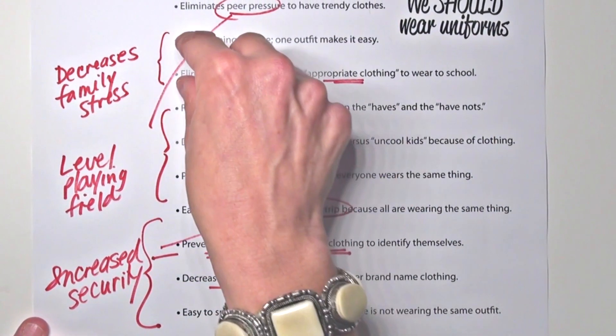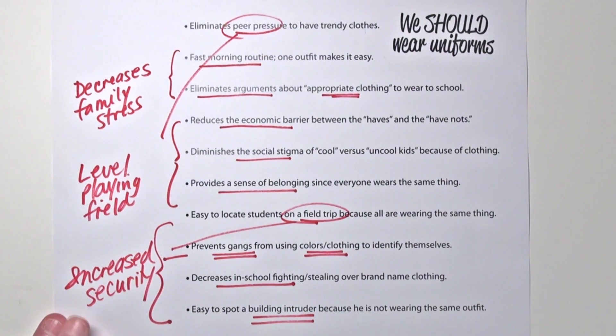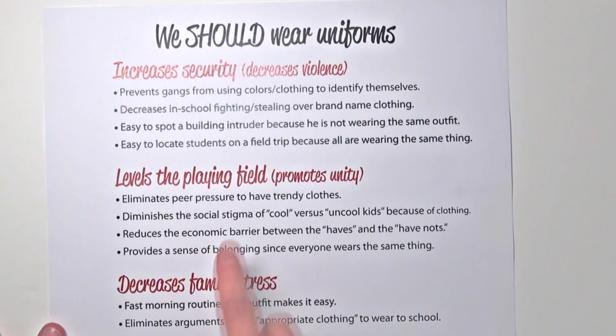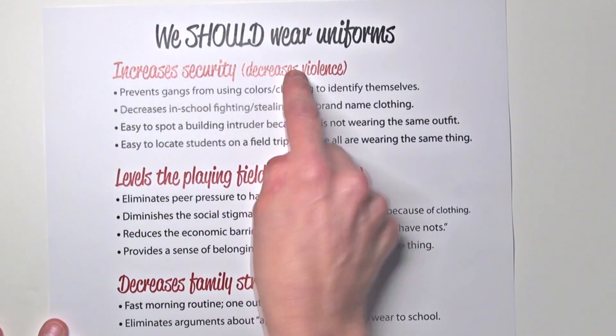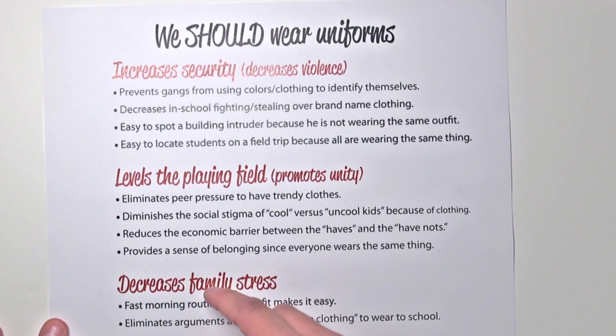Do you see how we grouped similar ideas into categories, and those categories are now reasons? If each of those reasons — security, leveled playing field, decreased family stress — became its own paragraph, I've now got a topic sentence with supporting details, topic sentence with supporting details, topic sentence with supporting details. So that initial list that students made was not a list of reasons — it was a list of details. We need to make that list, but then students have to step back and group similar details in order to infer the reasons.